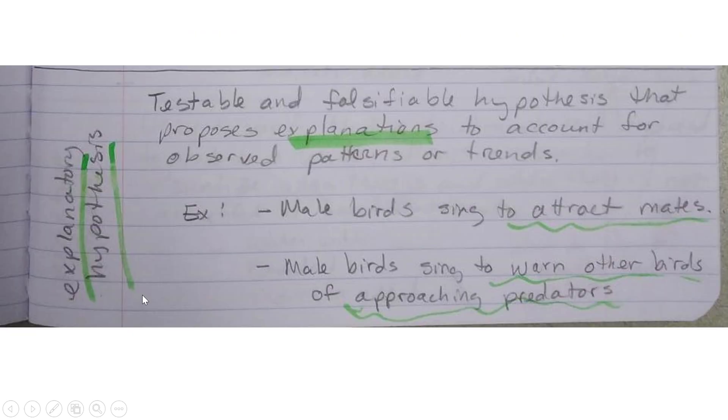Explanatory Hypothesis. It is a testable and falsifiable hypothesis that proposes explanations to account for observed patterns or trends. So for example, male birds sing to attract mates. This is the explanation part. Another example, male birds sing to warn other birds of approaching predators.